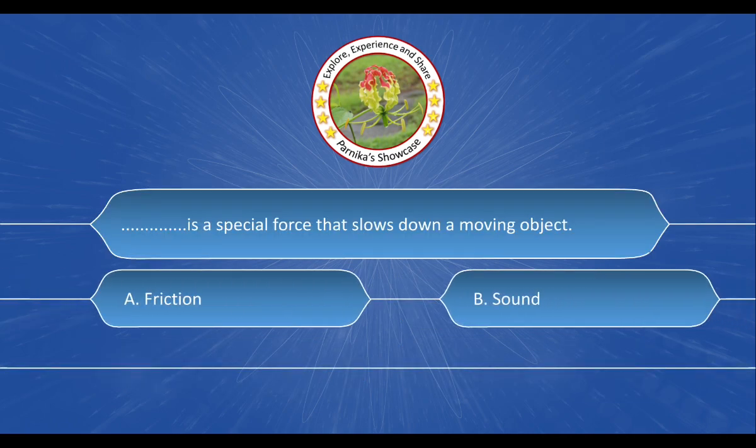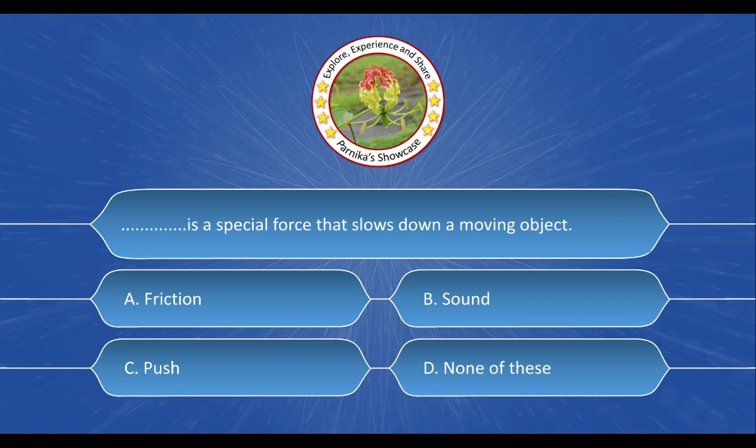Next question is, blank is a special force that slows down a moving object. And the options are A. Friction, B. Sound, C. Push, D. None of these. And the correct answer is option A, Friction.